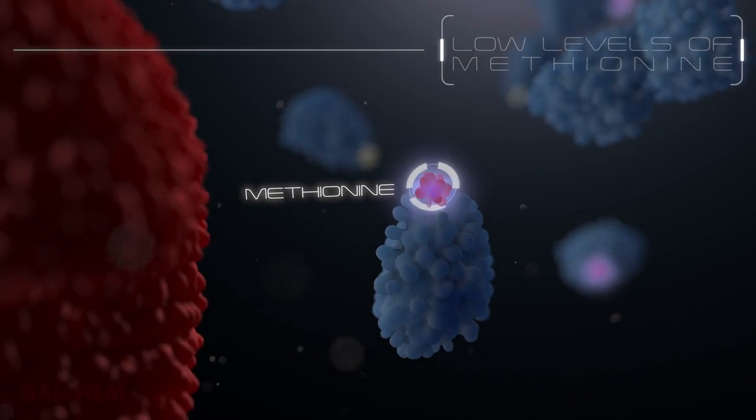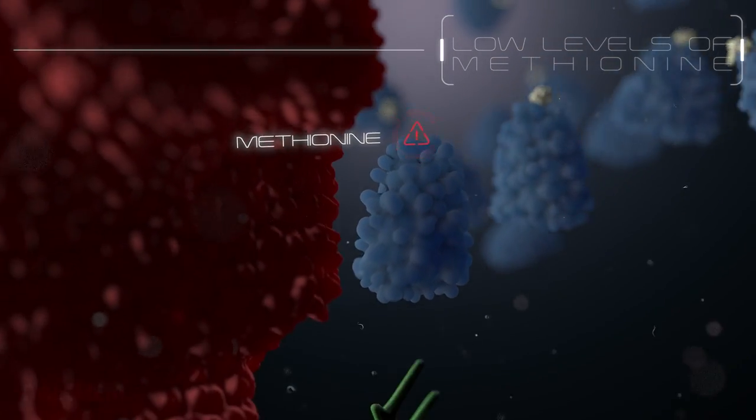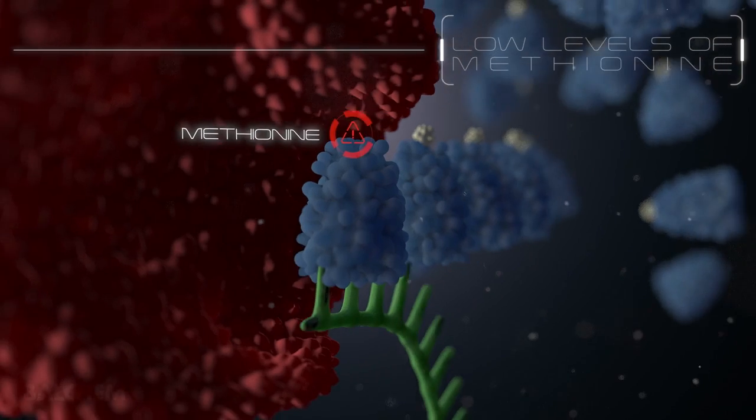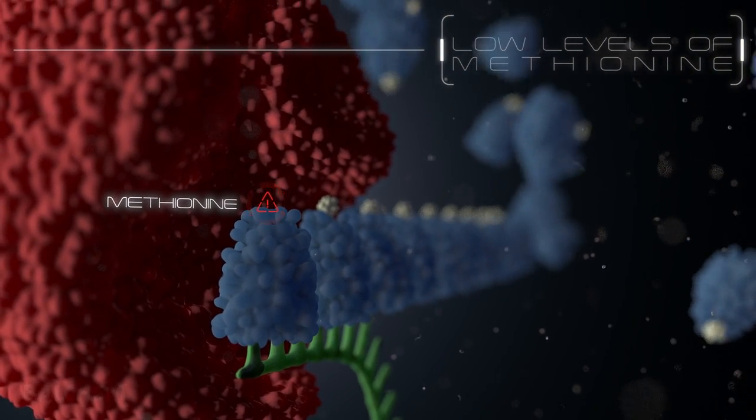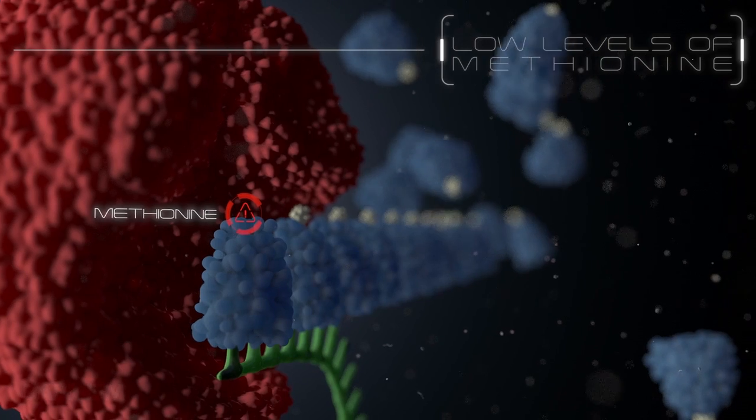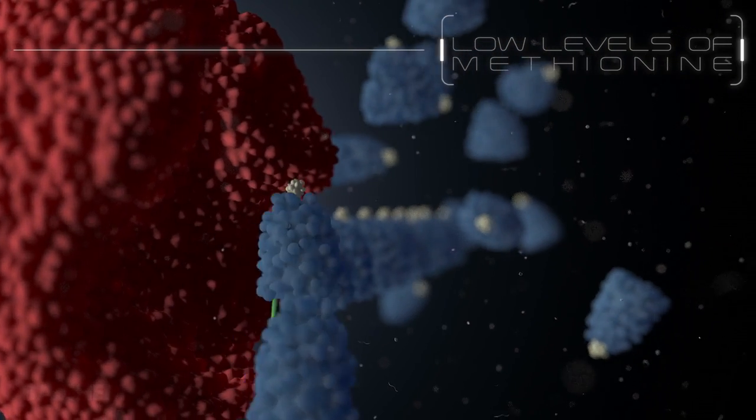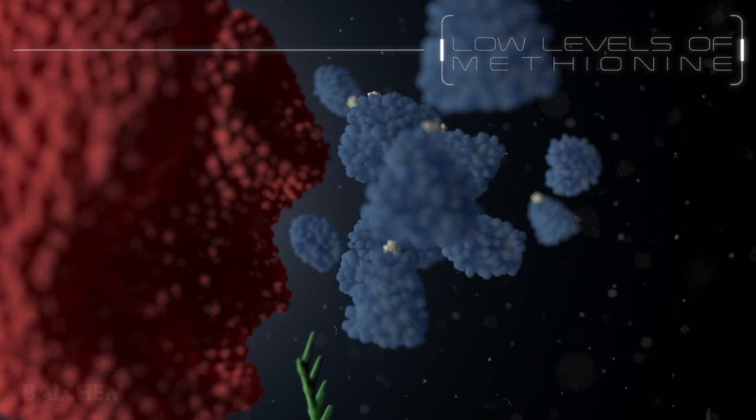Because methionine is a limiting amino acid, many times there is not enough methionine available to build more milk protein molecules. When this occurs, milk protein production is halted, negatively impacting the protein content in milk and dairy farmer profitability.